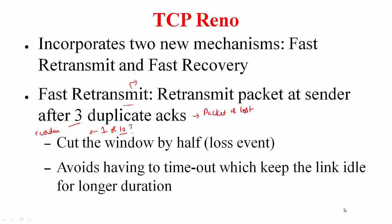When you receive three duplicate ACKs you assume the packet is lost. You retransmit the packet and, knowing the loss is due to congestion, you cut the window by half. This doesn't mean there are no timeouts — timeouts remain the backup mechanism. This way you avoid having to timeout, which keeps the link idle for a longer duration, so you are acting much faster.